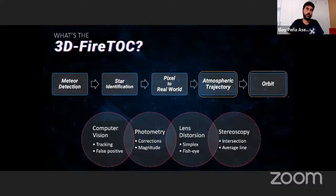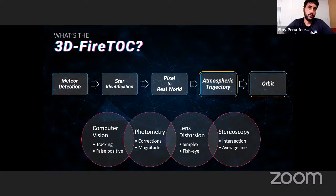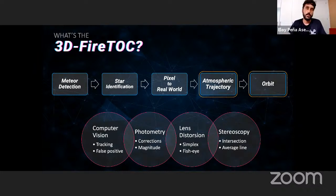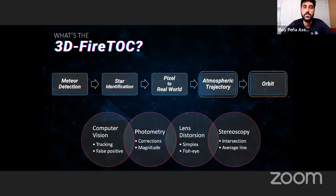To record events and extract physical parameters for impact hazard studies, we have developed the software 3D-FIRETOC — Three-Dimensional Fireball Trajectory and Orbital Calculator — an automatic Python code. The main steps are: meteor detection, where we process frames and extract the pixel position of the meteor; star identification in the field of view to convert pixel coordinates to real-world coordinates; and then reconstruction of the atmospheric trajectory and orbit, using computer vision techniques and stereoscopy methods.